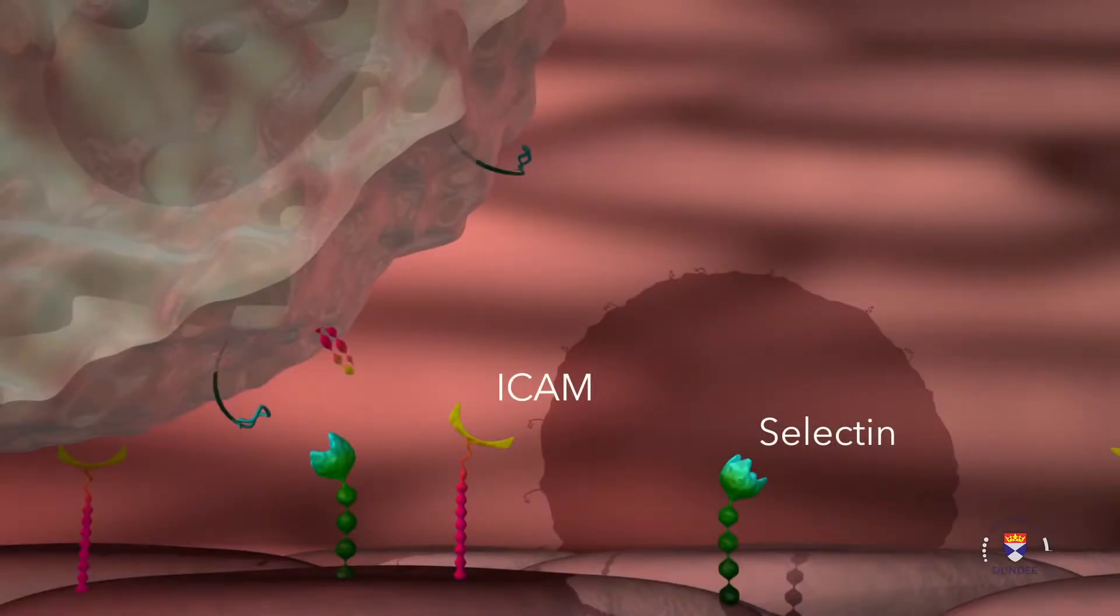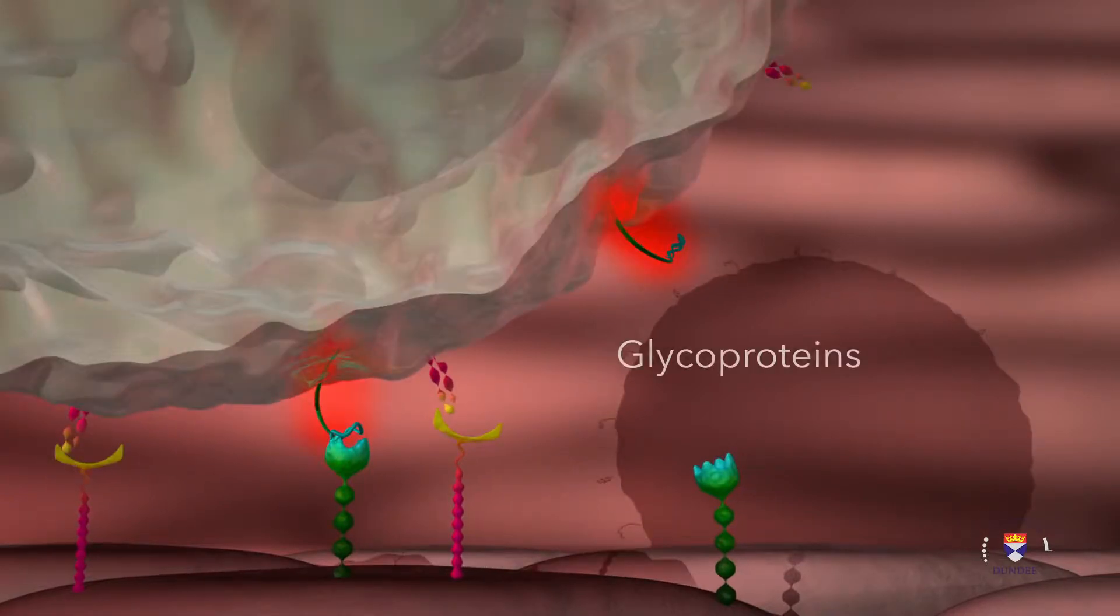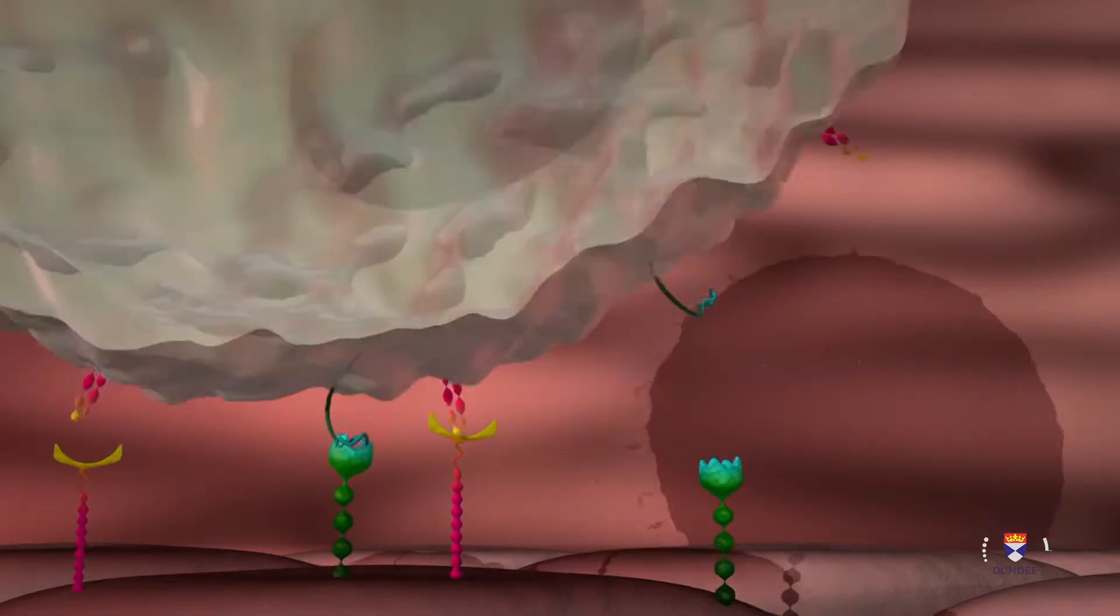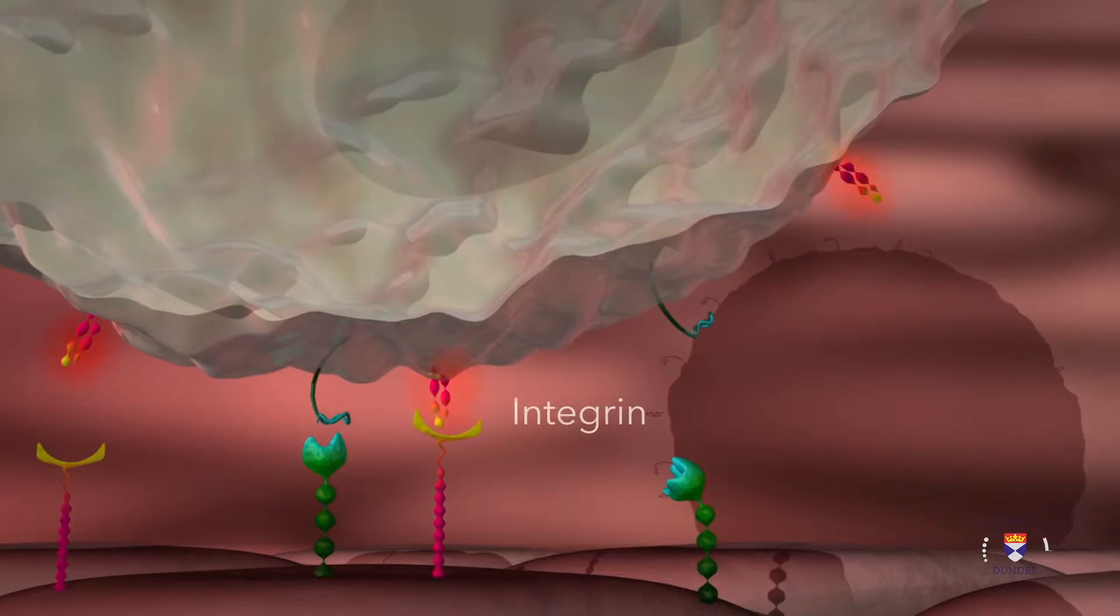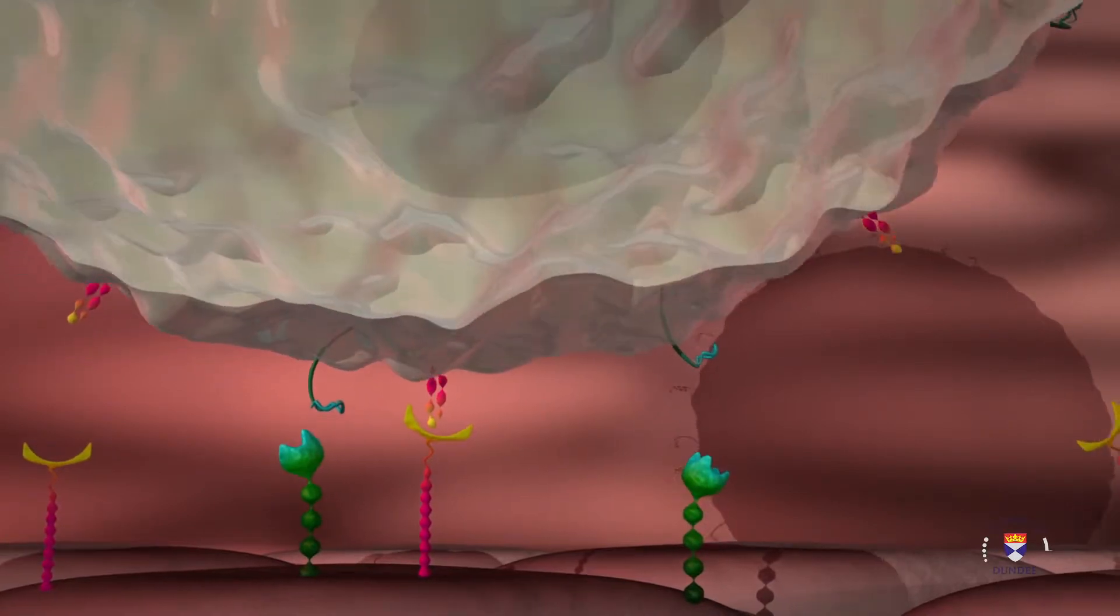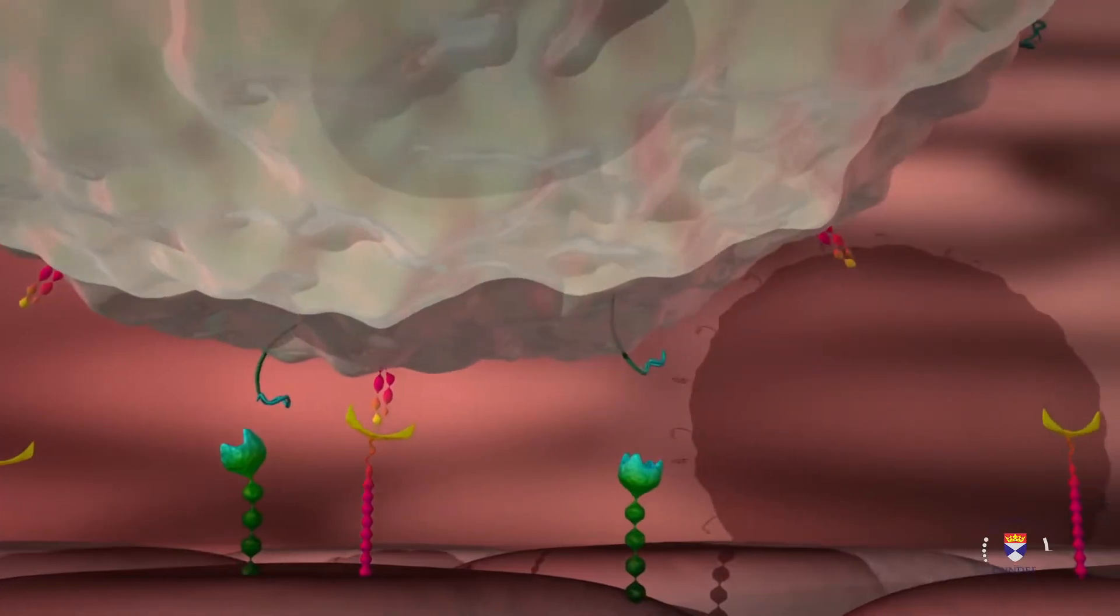The endothelial cells are also stimulated to start expressing selectin and ICAM proteins on their surface. Selectins bind to glycoproteins on the surface of cells and ICAM proteins bind to integrin, protein expressed on the surface of leukocytes. These allow the leukocytes to bind to the walls of the vessel.